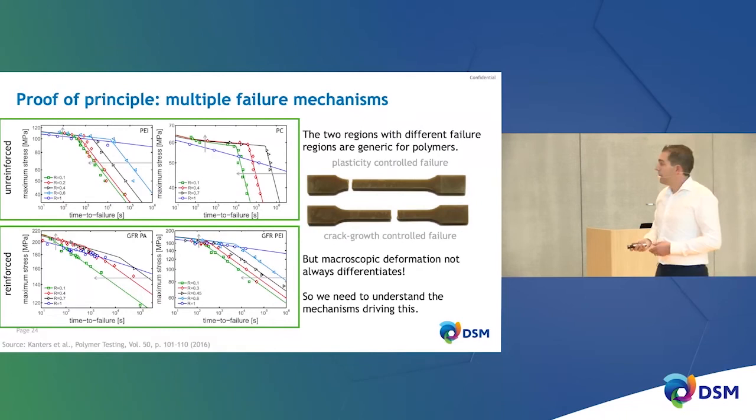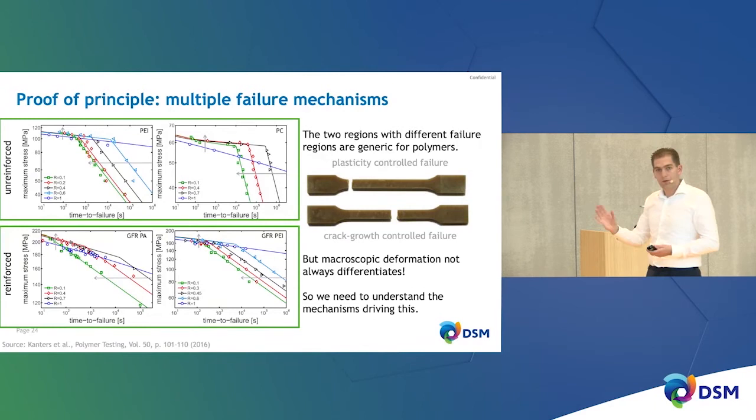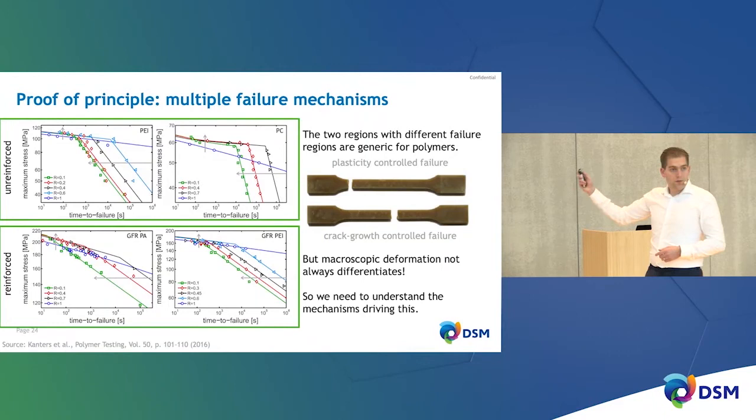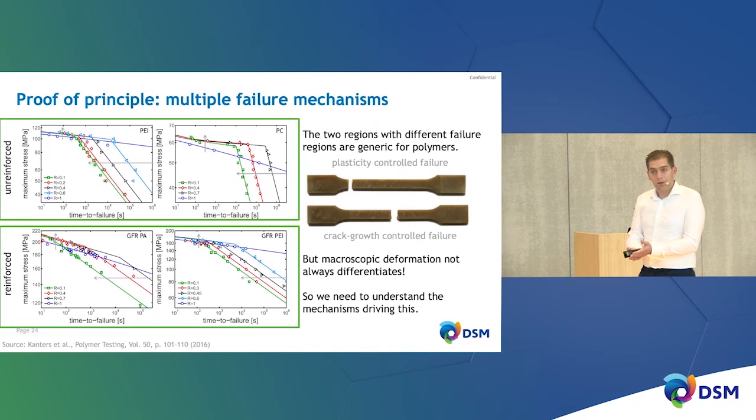The problem is that in glass-fiber filled systems, the microscopic deformation mode no longer lets you distinguish visually between these two failure mechanisms. So you need to understand something else — what determines whether you have very local plastic strain accumulation or crack-growth propagation. You need to truly understand the mechanisms driving this time dependency, so you can properly model the R-value dependency of these mechanisms.